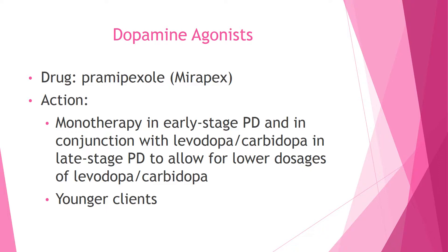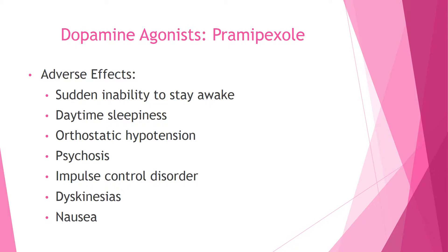The dopamine agonist pramipexole (Mirapex) can be used as monotherapy — a single drug — in the early stages of Parkinson's and in conjunction with levodopa-carbidopa in later stages to allow for lower doses of levodopa-carbidopa. This helps preserve its effectiveness over more years. Mirapex is preferred in younger patients because starting levodopa-carbidopa too early is not ideal.